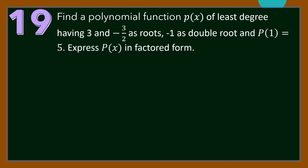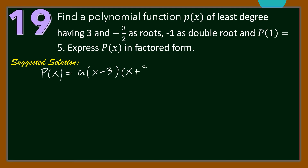Number 19. Find the polynomial function P(x) of least degree, having 3 and −3/2 as roots, −1 as a double root, and P(1) = 5. Express P(x) in factored form. From the given information, we can form the function P(x) = a(x − 3)(x + 3/2)(x + 1)², since 3 is a root, −3/2 is also a root, and −1 is a double root.